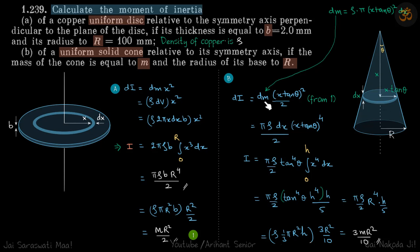Now dm is again ρ × dv, so the small volume of the disc is πr² dx, where r is x tan θ. We'll substitute the value of dm here.